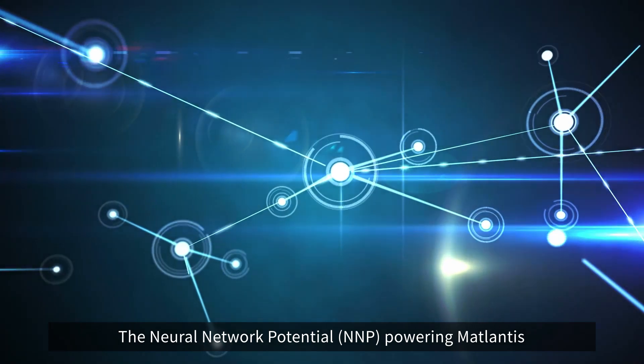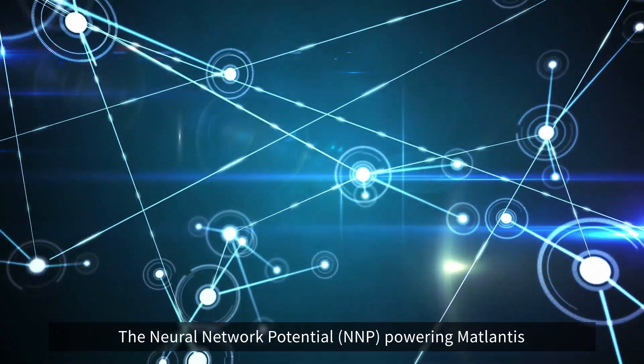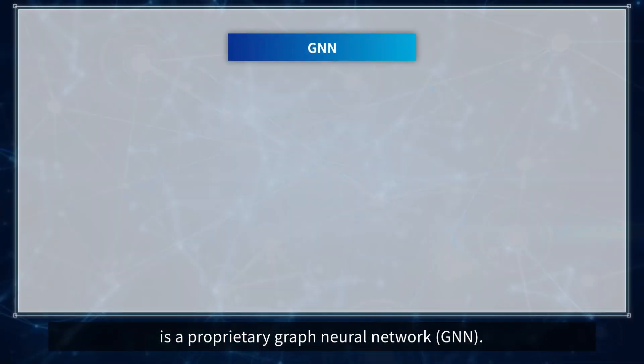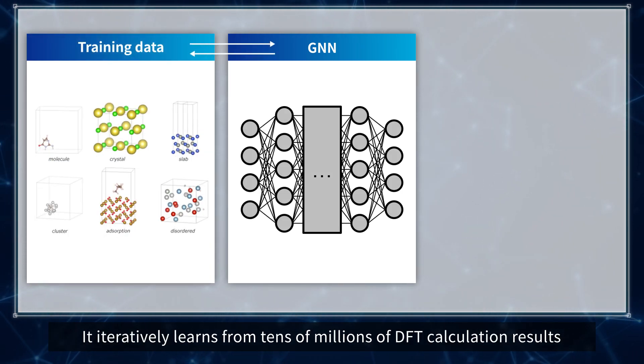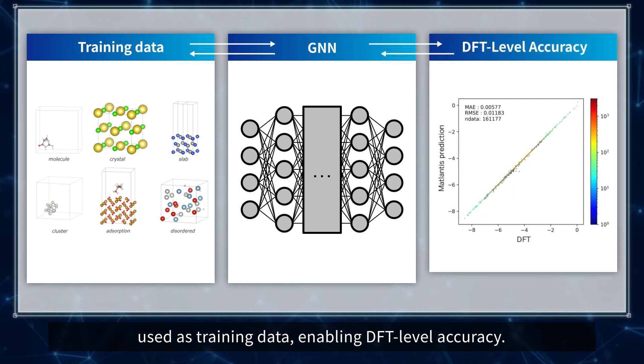The neural network potential powering Matlantis is a proprietary graph neural network. It iteratively learns from tens of millions of DFT calculation results used as training data enabling DFT level accuracy.